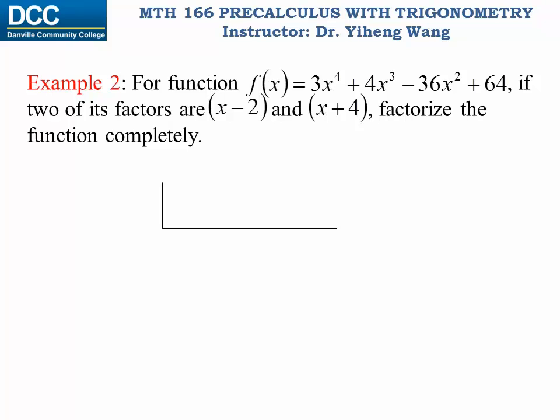In this case the function is in descending order, but we have a missing term — we don't have the linear x term, x to the first power. Therefore we write down the coefficients: three, four, negative thirty-six, and zero — we fill in zero for that missing x term — and then sixty-four.